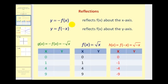Y equals negative f of x reflects f of x about the x-axis. Remember, f of x is equal to y, so if we change the sign of the y-coordinates, that would reflect the graph about the x-axis. If y equals f of negative x, this would reflect f of x about the y-axis. Here, we're changing the sign of the x-coordinates and therefore we'll reflect the graph across the y-axis.